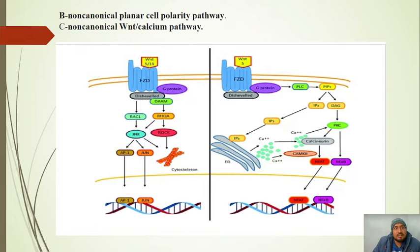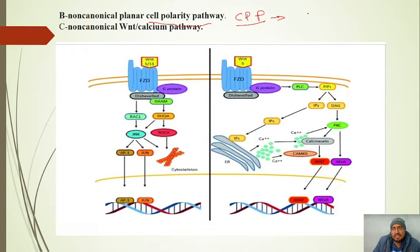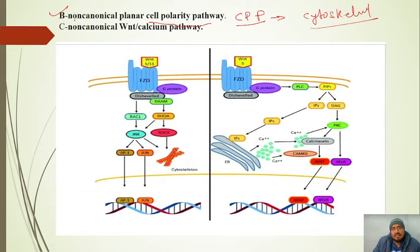Next, the non-canonical planar cell polarity (PCP) pathway. The PCP pathway is basically responsible for cytoskeleton organisation. In the non-canonical WNT pathway, beta-catenin does not play a role. The binding pathway begins the same — WNT binds the Frizzled receptor — but beta-catenin is not involved.